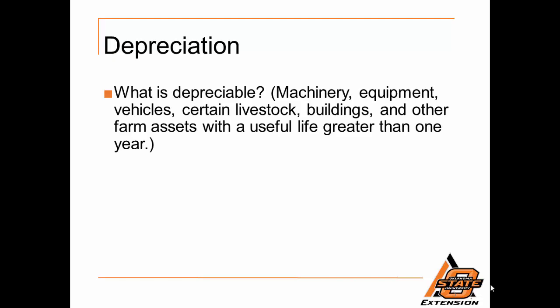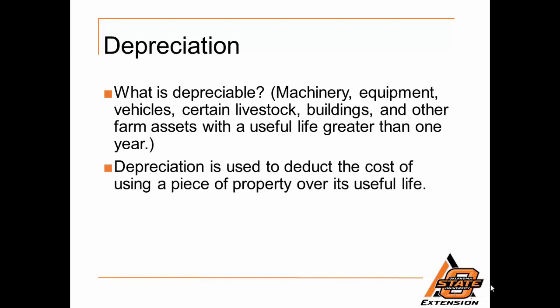What is depreciable? That is the purchase of new or used machinery, equipment, vehicles, breeding livestock, dairy livestock, draft livestock, buildings, and any other farm assets with a useful life greater than one year. Depreciation is deducting the cost of using a piece of property over its useful life. There is a difference between tax depreciation and book depreciation — tax depreciation is much faster and typically will not coincide exactly with the machine's useful life. But it does allow for a reduction in that asset at a much faster rate, which is good for tax management purposes.